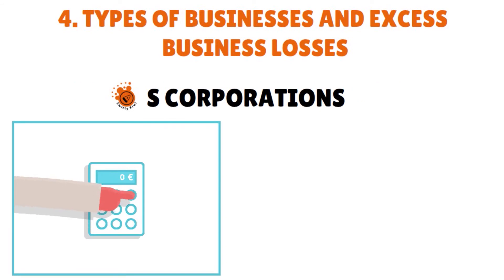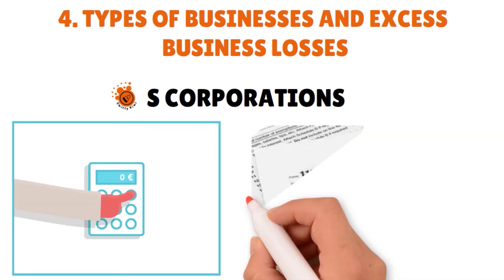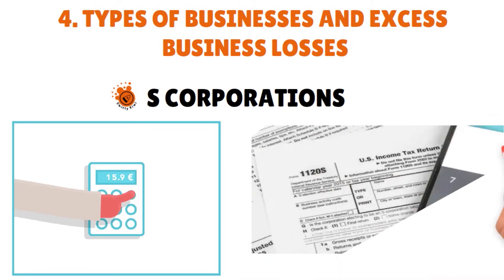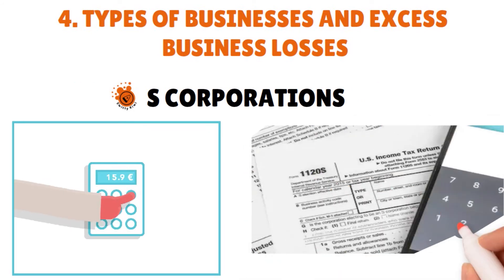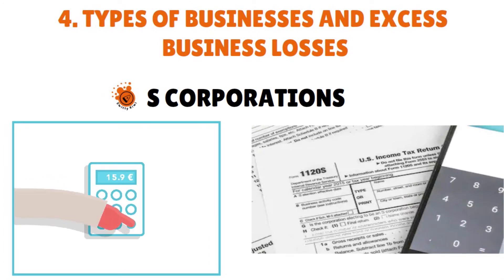S-corporations calculate business taxes on Form 1120-S with income passing through to individual owners. If you file Form 1120-S for an S-corporation, this is also an FYI return — the corporation itself does not pay taxes to the IRS; the owners do, which is why it is called a pass-through entity.